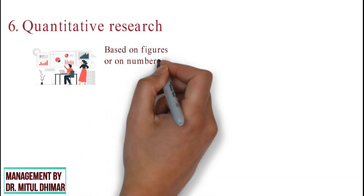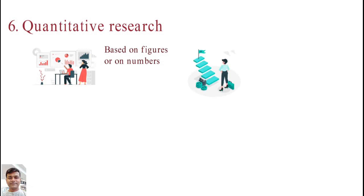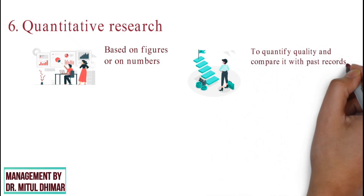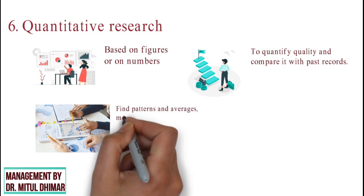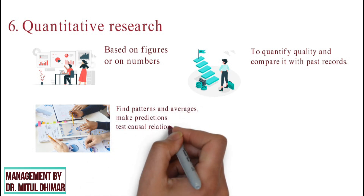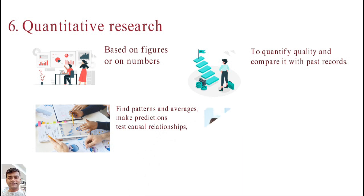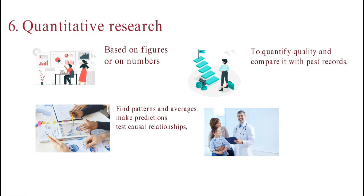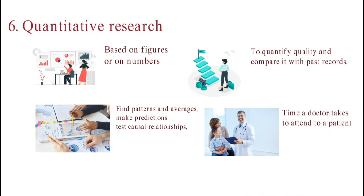Type 6: Quantitative research. This is a study based on figures or numbers, which is why the title is quantitative. The main purpose is to quantify data and compare it with past records. It can be used to find patterns and averages, make predictions, test causal relationships and generalize results to broader populations. An example is a survey conducted to understand the amount of time a doctor takes to attend to patients when they go to the hospital.